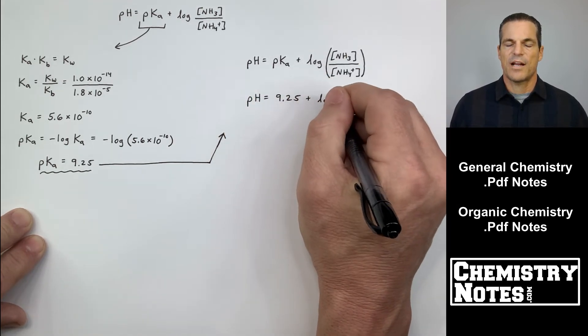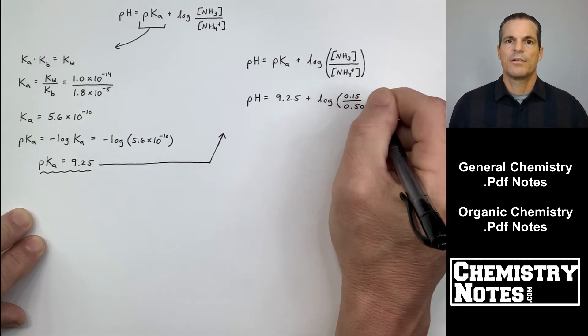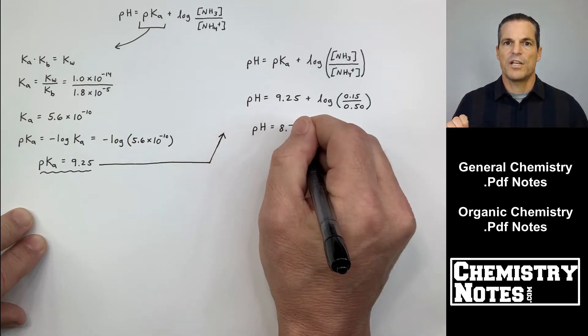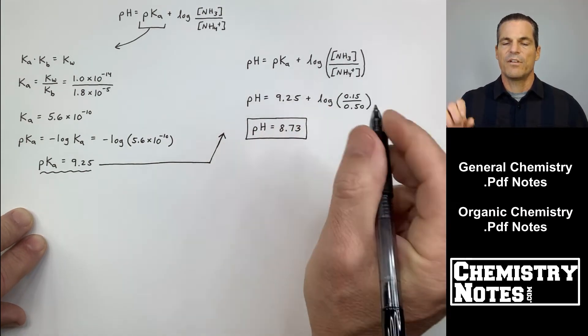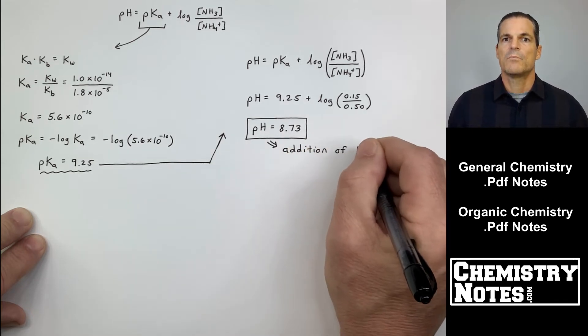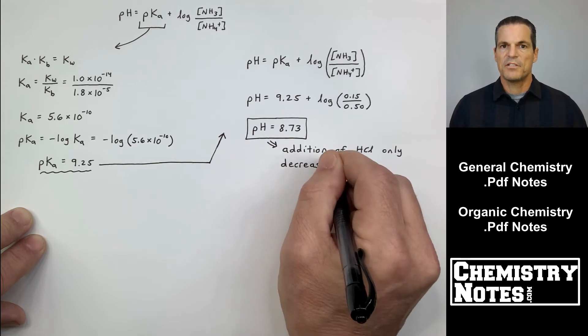I can plug that in. On the right-hand side of the paper now, pH equals 9.25 plus the log of the NH3 concentration at equilibrium 0.15 all over the concentration of NH4 plus at equilibrium 0.50. That's my after. So the pH is 8.73.